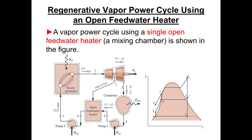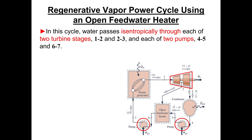Let's talk about the open feed water heater regenerative systems. Here's a sketch of the system showing the heat exchanger — the open feed water heater — with dashed lines at the bottom and the corresponding T-S diagram on the right. We'll assume ideal components: the turbines and pumps are isentropic with no heat transfer between them and the surroundings.